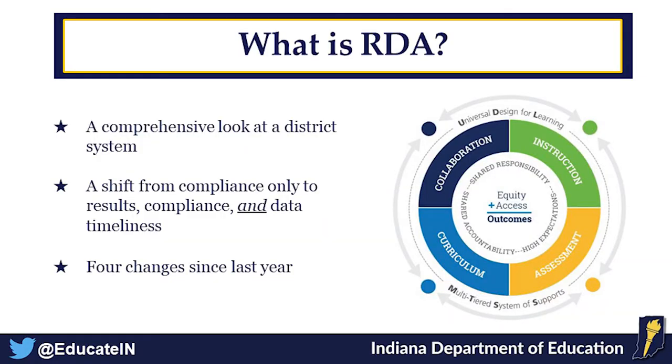RDA is our effort to combine results indicators and compliance indicators into a more cohesive system. The federal government gives Indiana a determination looking at results, compliance, and fiscal things — one score. We're trying to do the same with you. The feds recognized that even if states and districts were 100% compliant, that didn't necessarily mean outcomes were better, so they wanted to bring in results indicators as well. In year two, we've made four changes.